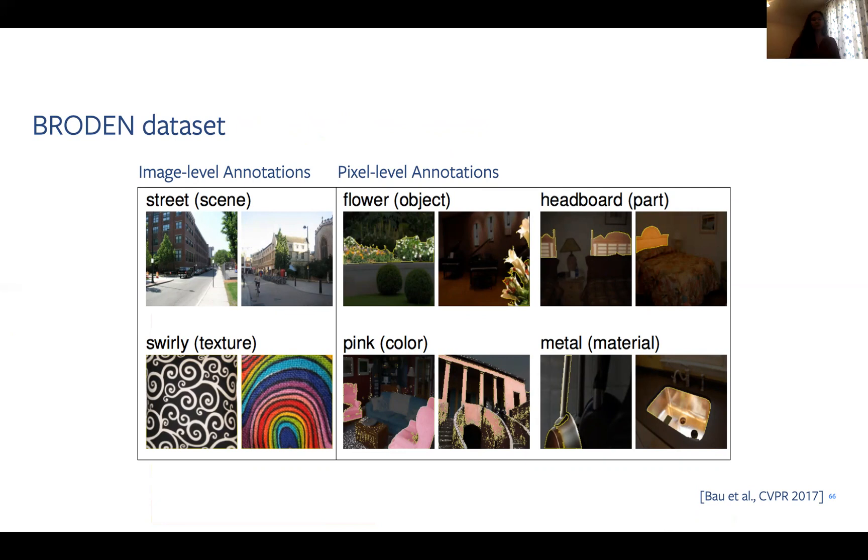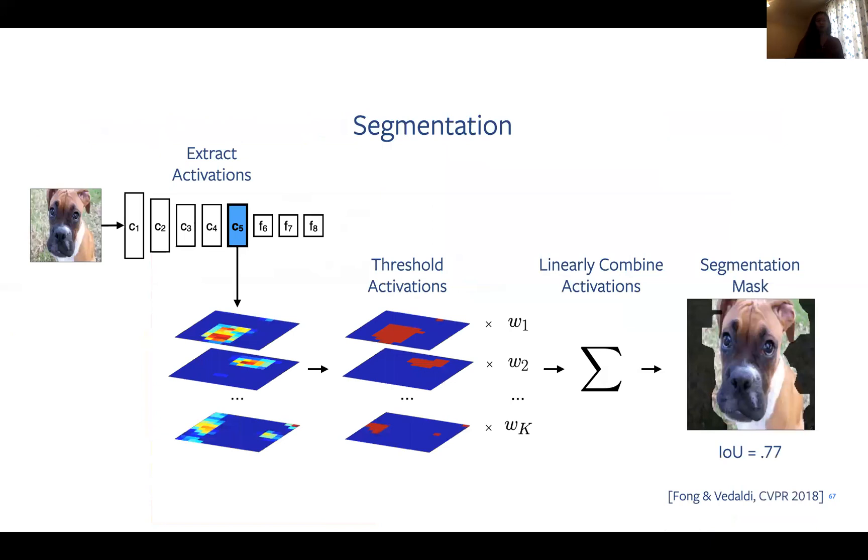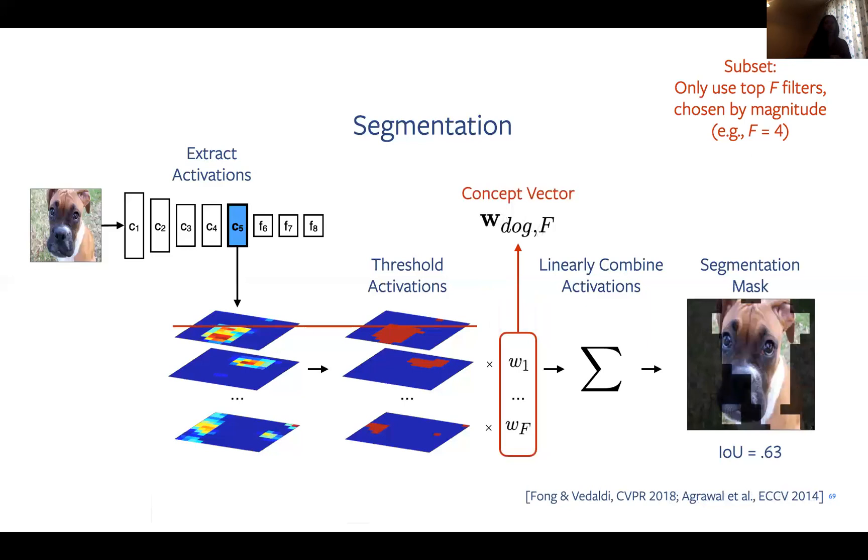Now I'll quickly describe a few details. We use the concept data set to provide rich pixel and image level annotations for over 1,000 semantic concepts. We then probed our networks with concept images and saved their intermediate activations. For each concept, we learned a linear model that weighted activations to do segmentation and classification. In this example, we extract intermediate activations of all dog images, thresholded them so that we only keep the extreme activations, and learn to linearly combine them to produce up-sampled segmentation masks. These learned weights that were used to linearly combine activations then form the concept vector, in this case the dog one. We can also do this for subsets of filters, like the top four filters, which are selected based on the magnitude of the values from the original concept vector. This paradigm was used in prior work as well.